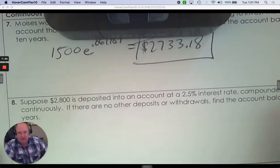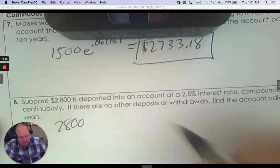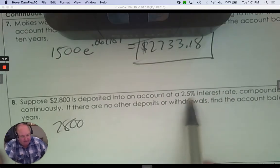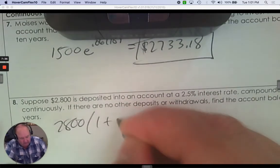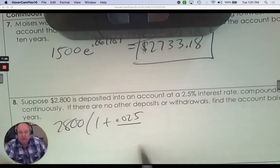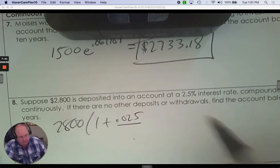Number eight. Suppose $2,800 is deposited. Again, two and a half percent compounded continuously. So make sure you write it as a decimal.